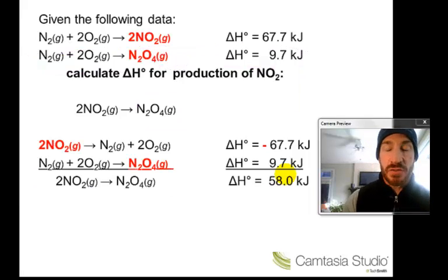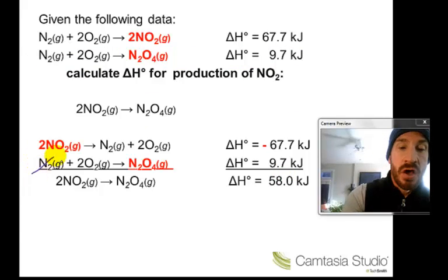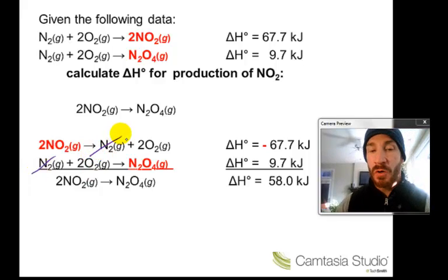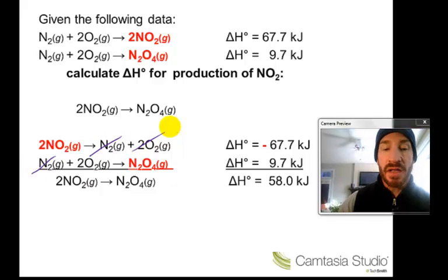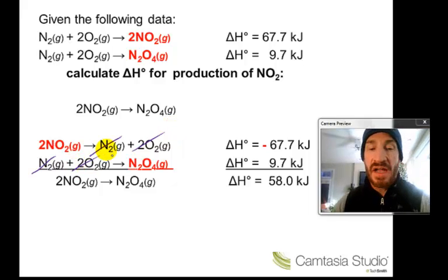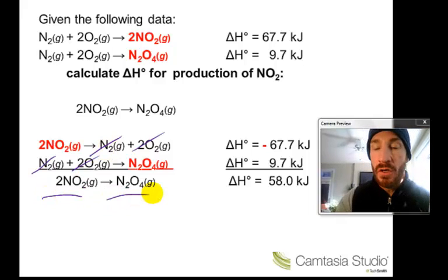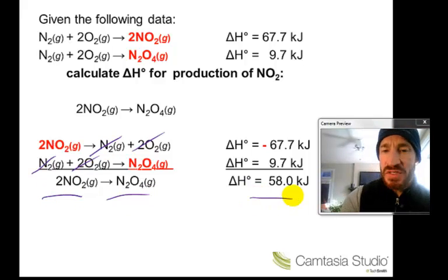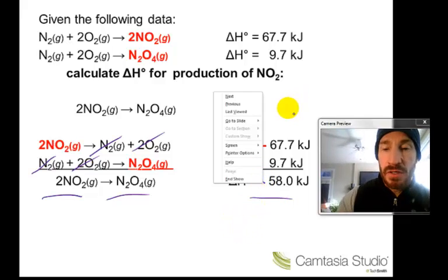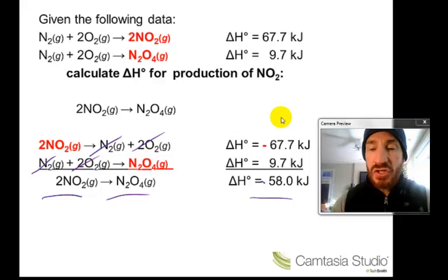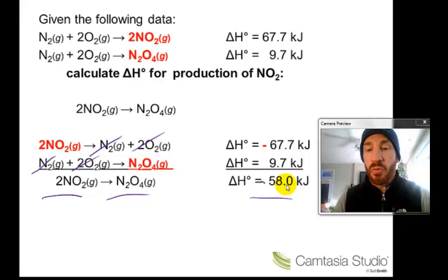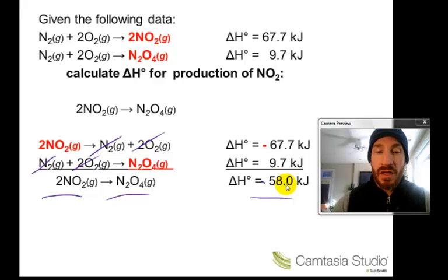Combining the two reactions: one mole of N₂ as a reactant cancels with one mole of N₂ as a product, and two moles of O₂ as a product cancel with two moles of O₂ as a reactant. What remains is two moles of NO₂ produces one mole of N₂O₄. Note: there should be a negative sign on the first delta H — it should be negative 67.7, not positive. So negative 67.7 plus 9.7 gives negative 58.0 kilojoules. That concludes Hess's Law.